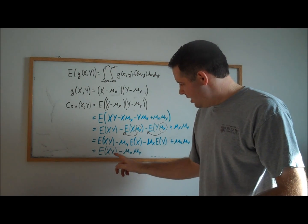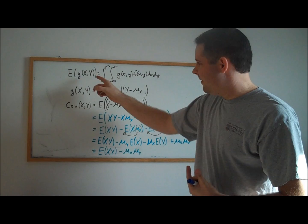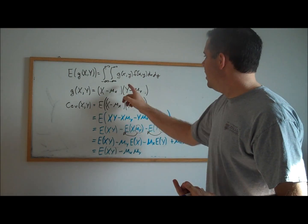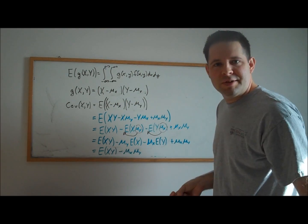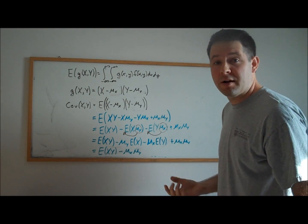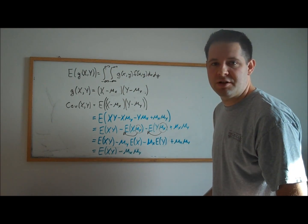You can compute the expectation of X times Y. That's just a function of the random vector. It's going to be simpler to compute than something where you have subtraction in there for most practical purposes. Then you just subtract off the means times each other.